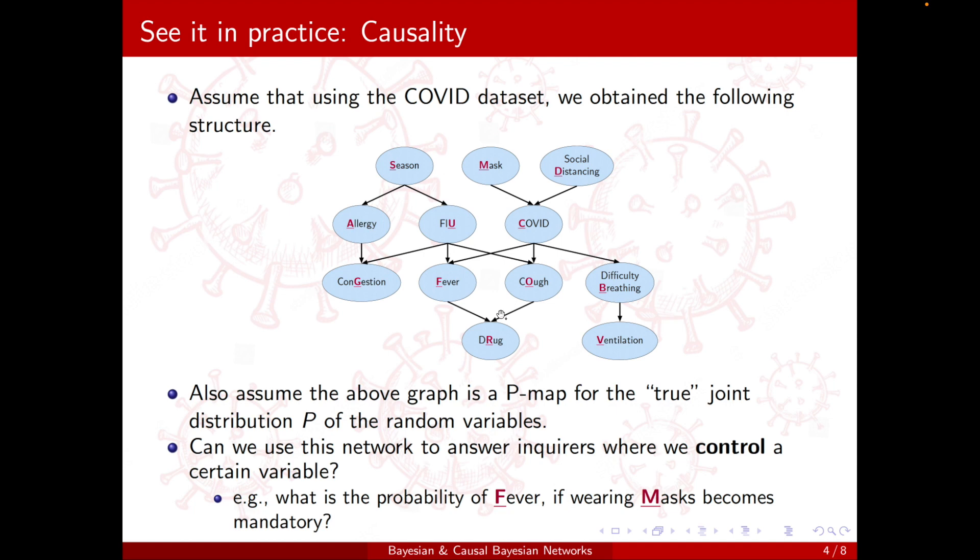Or what's the probability of COVID or cough in such a situation? Can I answer such a query using this Bayesian network just based on the fact that it's a P-map and determine this? Now note that this is not the same as given that the individual is wearing a mask. It's if we force masking and we want to see the result.